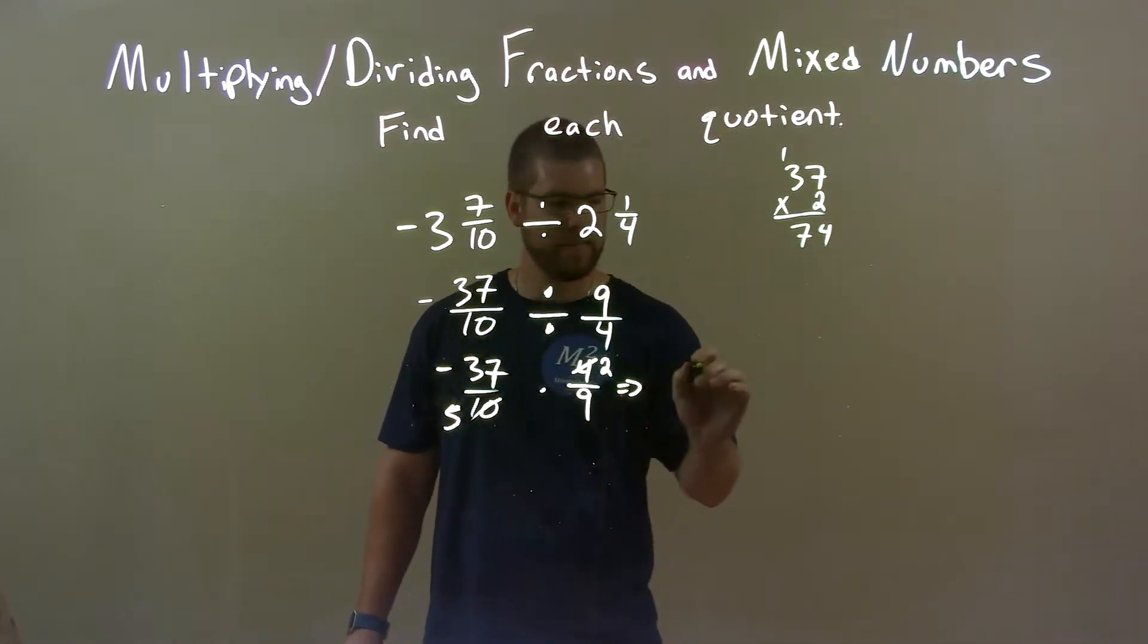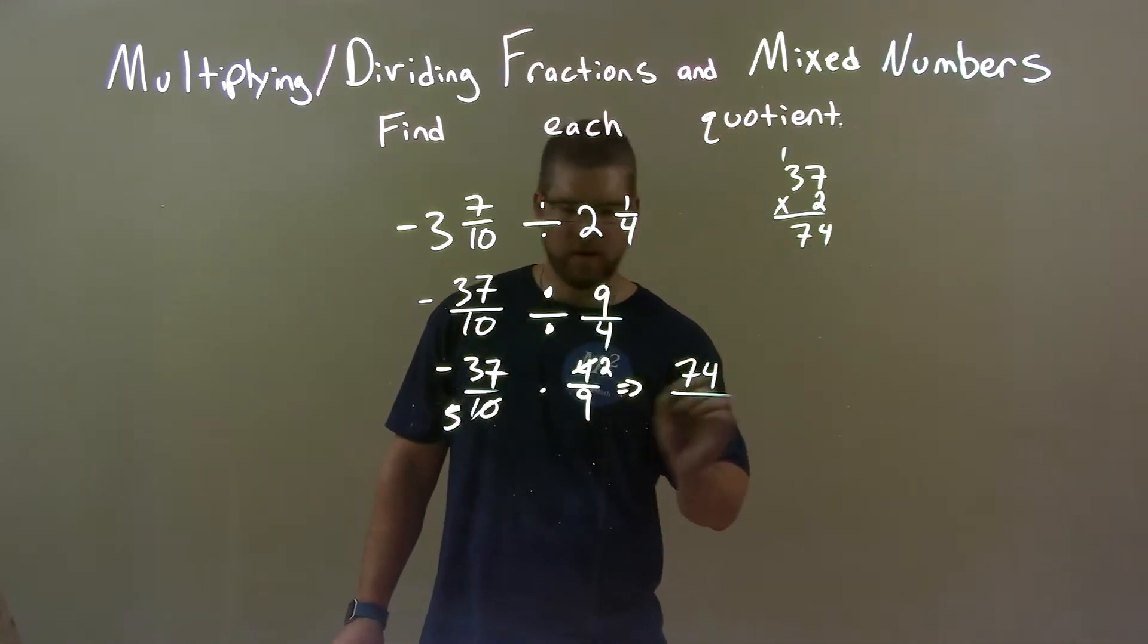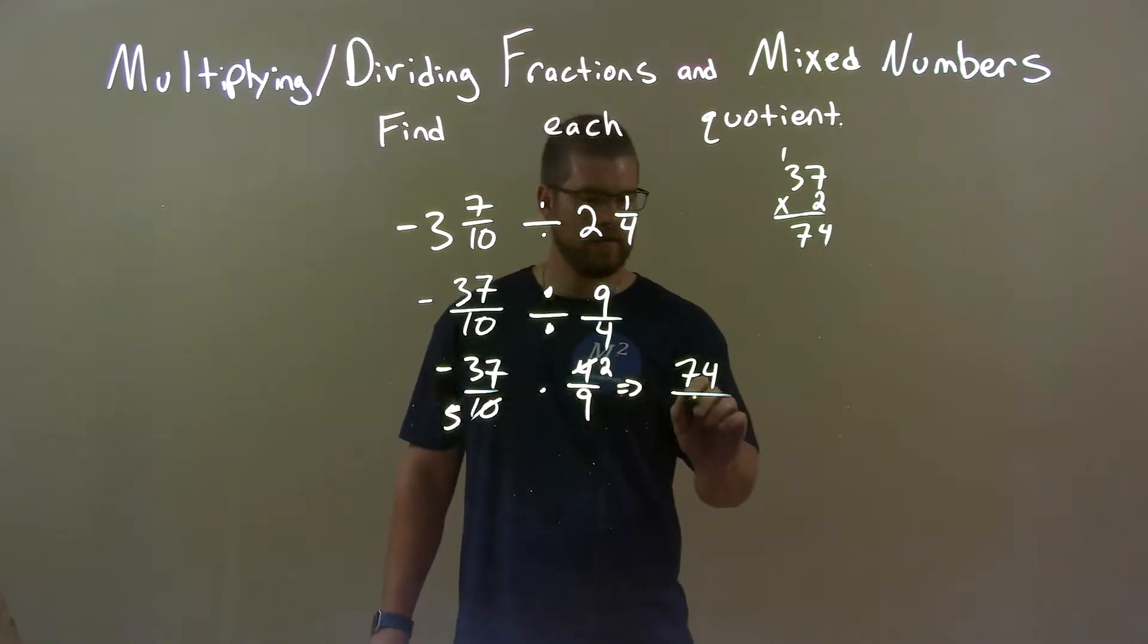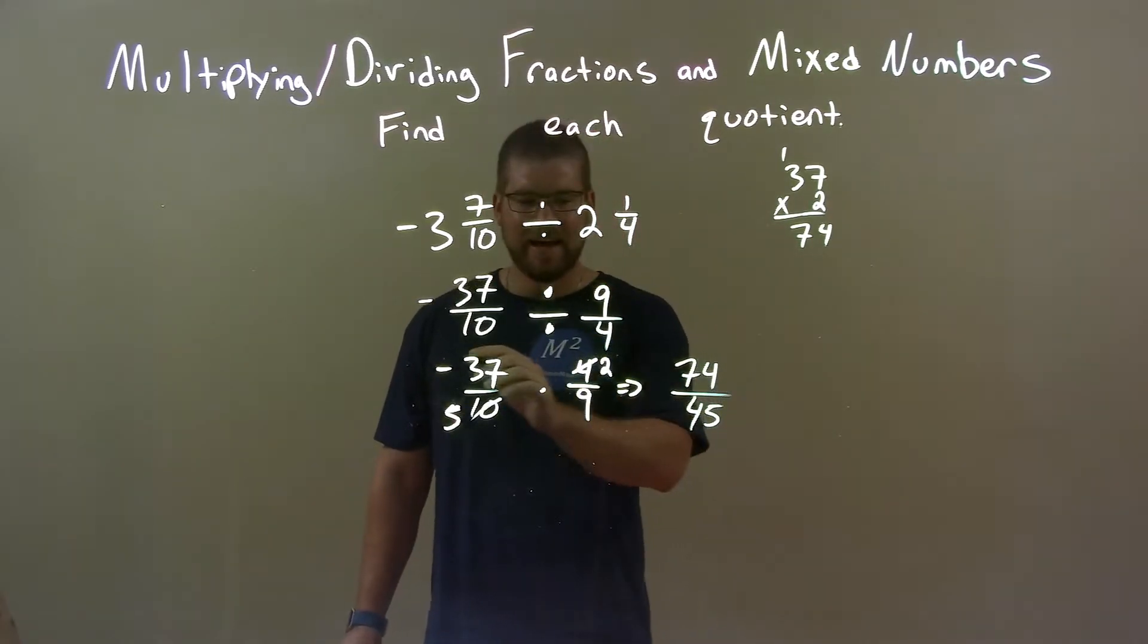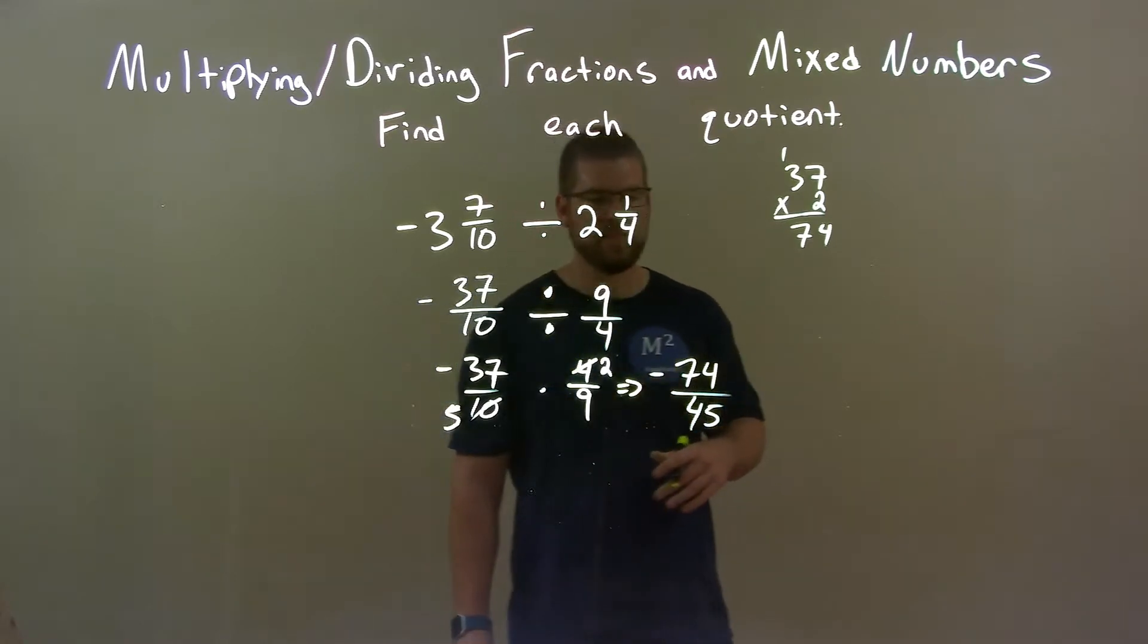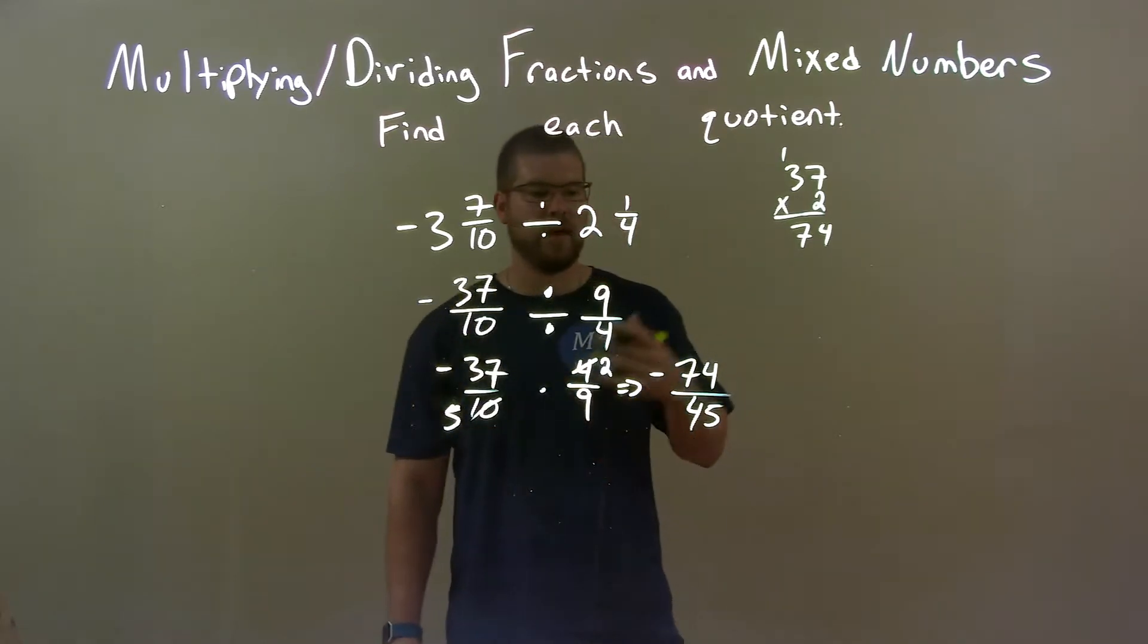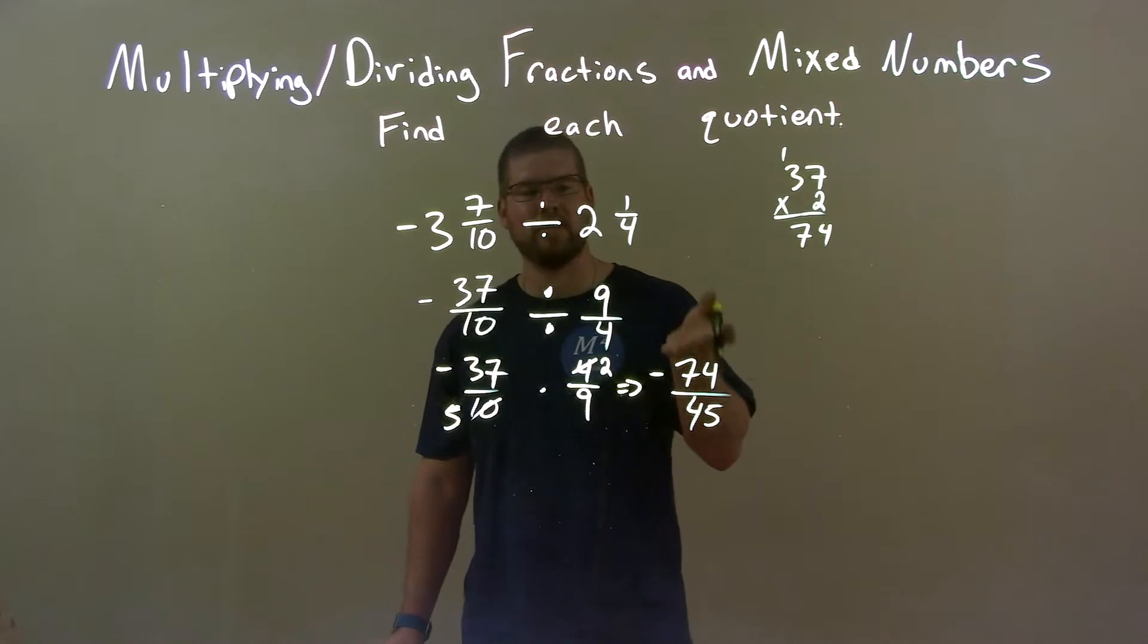2 times 3 is 6, plus 1 is 7. So we have 74 up top over 5 times 9 is 45, and a negative times a positive is a negative. So now we have to write this as a proper fraction.